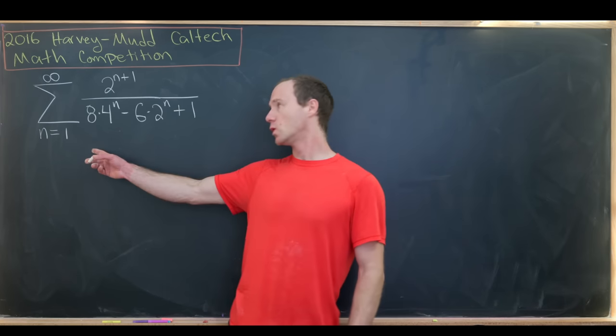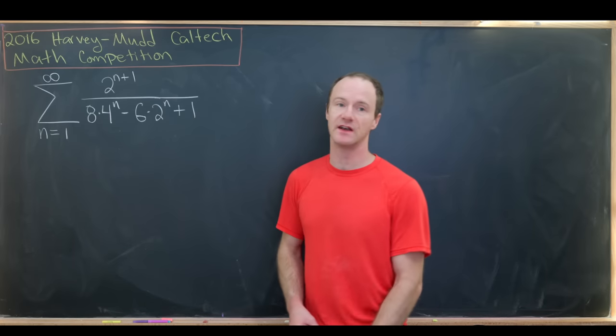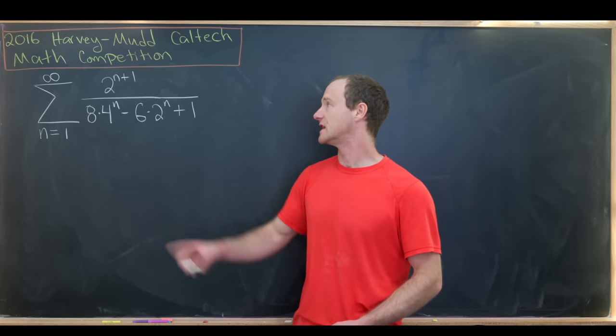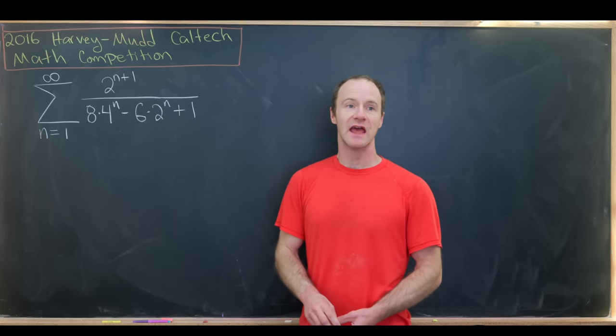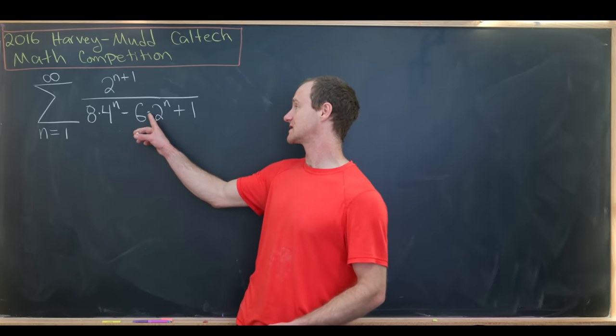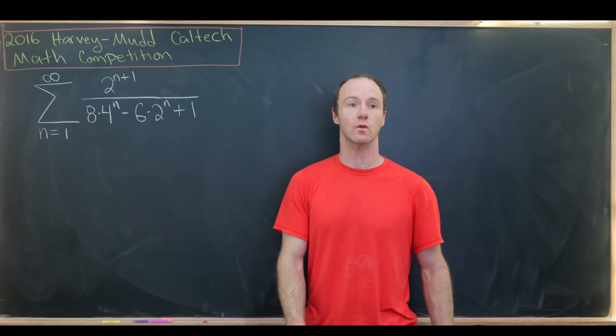Okay, so our goal here is to find the sum as n goes from 1 to infinity of 2^(n+1) over 8 times 4^n minus 6 times 2^(n+1) plus 1.